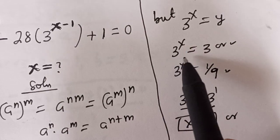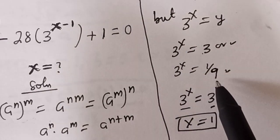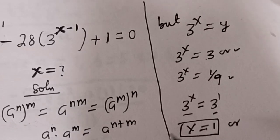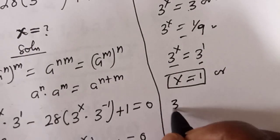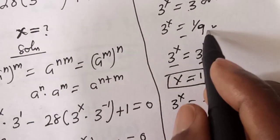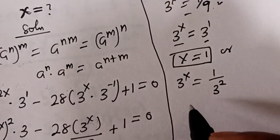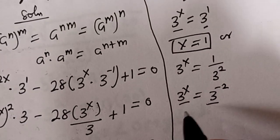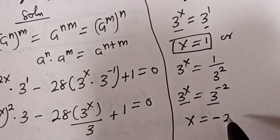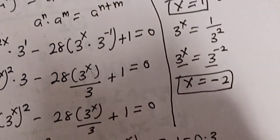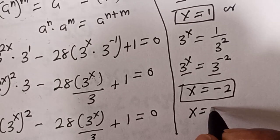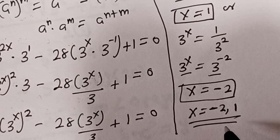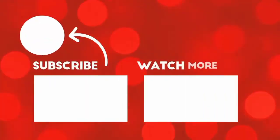Since 3 raised to power s equals 3, we get s equals 1. Or 3 raised to power s equals 1 over 9, which is 3 raised to power minus 2. Since the bases are the same, s equals minus 2. Therefore our final answers are s equals 1 and s equals minus 2. Like, share, comment and subscribe. Thank you, bye bye.